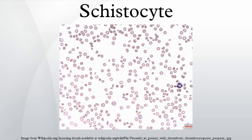Schistocyte formation occurs as a result of mechanical destruction of a normal red blood cell. This occurs when there is damage to the blood vessel and a clot begins to form. The formation of fibrin strands in the vessels occurs as part of the clot formation process. The red blood cells get trapped in the fibrin strands and the shear force of the blood flow causes the red blood cell to break. The resulting fragmented cell is called the schistocyte.